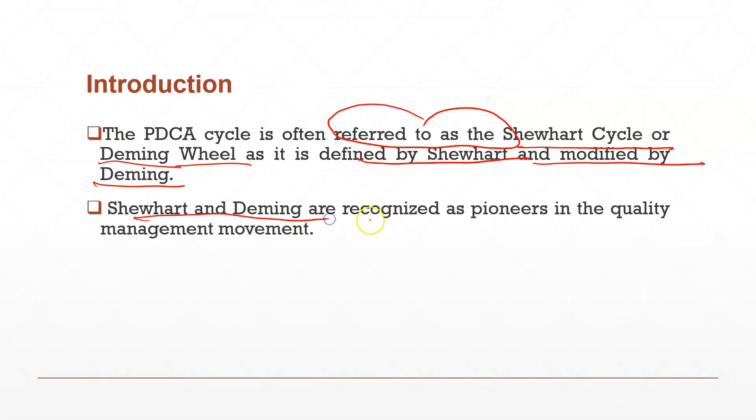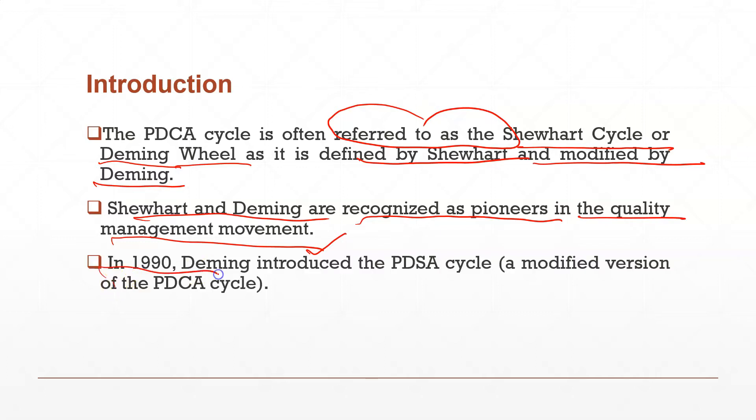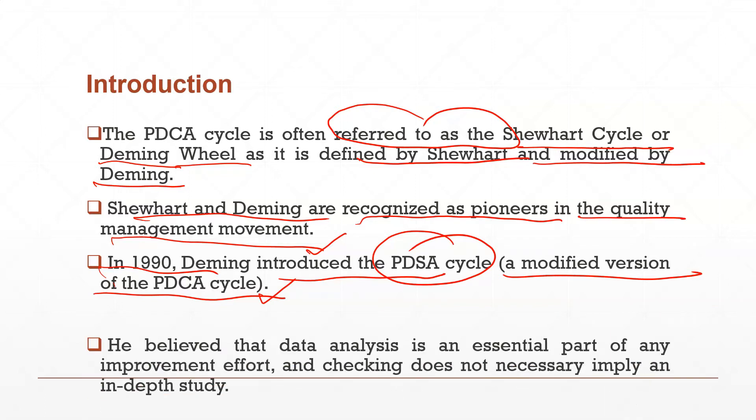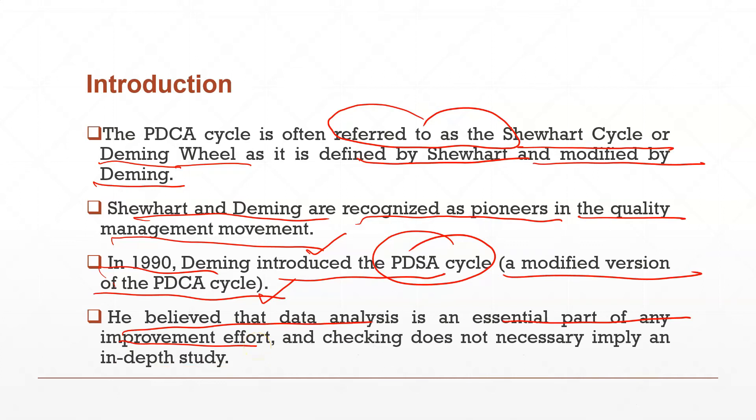Shewhart and Deming are recognized as the pioneers in the quality management movement. This is a total quality management concept of quality improvement. Shewhart and Deming made a strong contribution. In 1990 Deming introduced a cycle called PDSA which was the modified version of PDCA. The first cycle came which was called PDCA but later Deming modified it to PDSA in 1990.